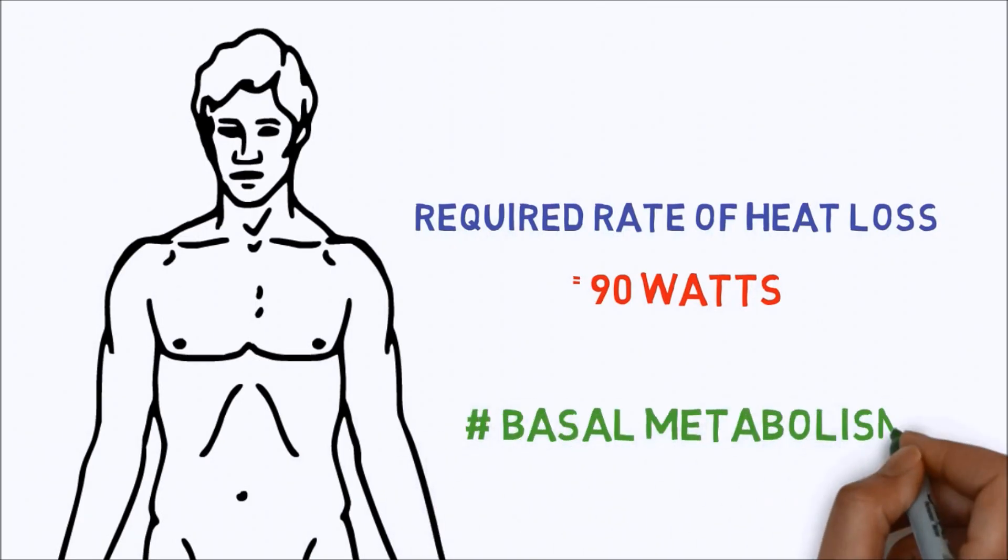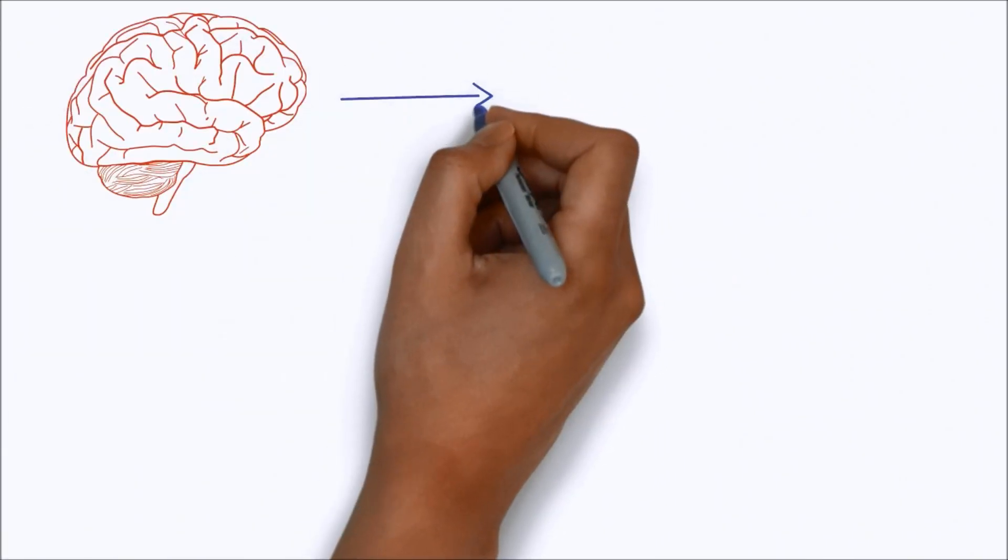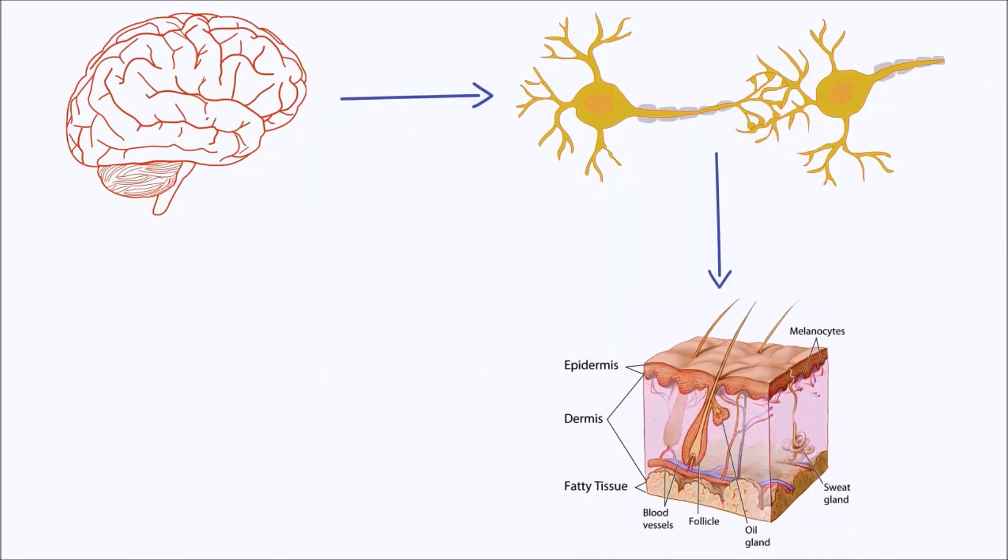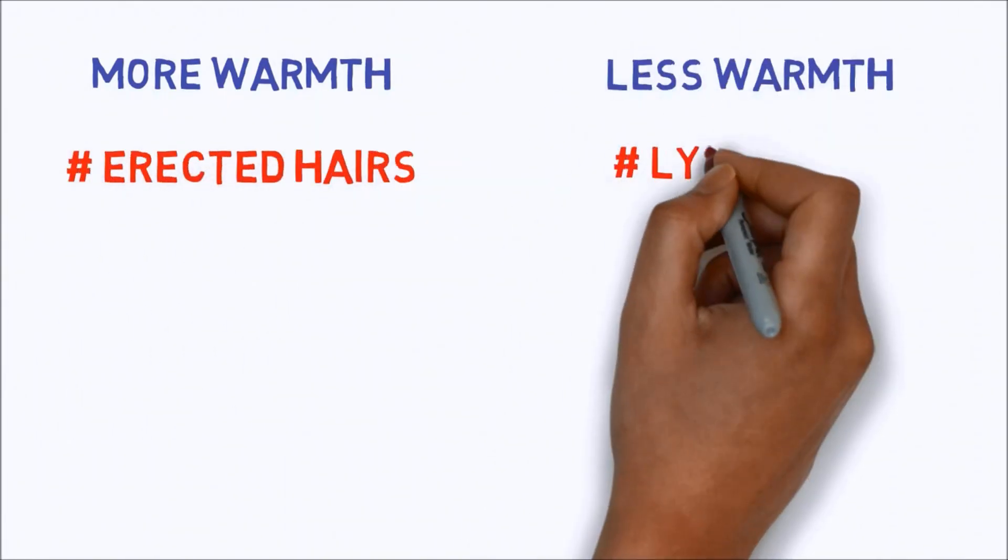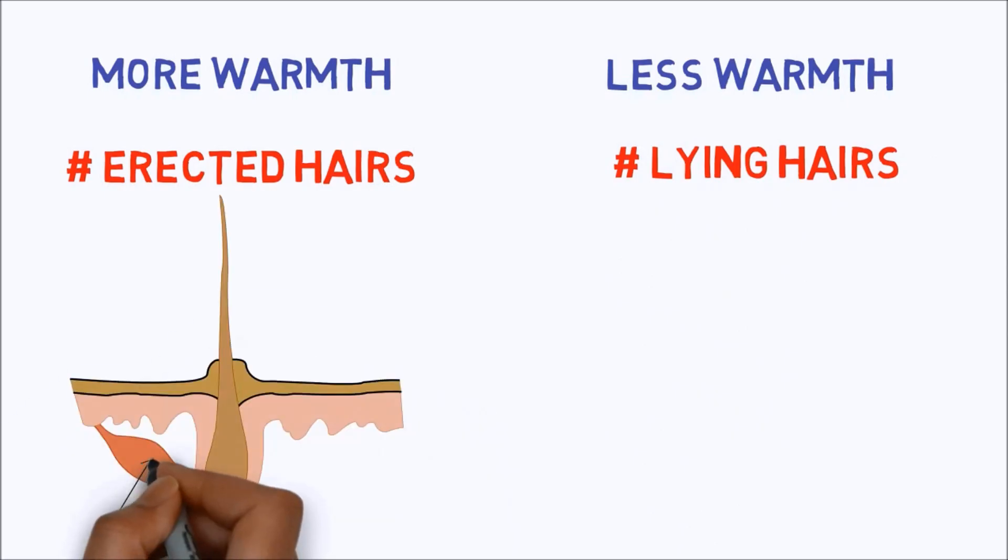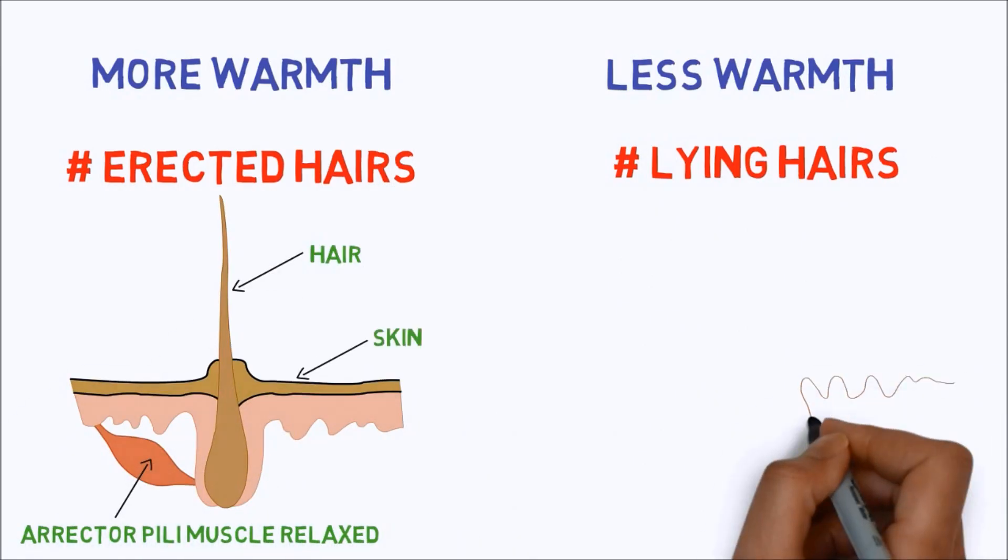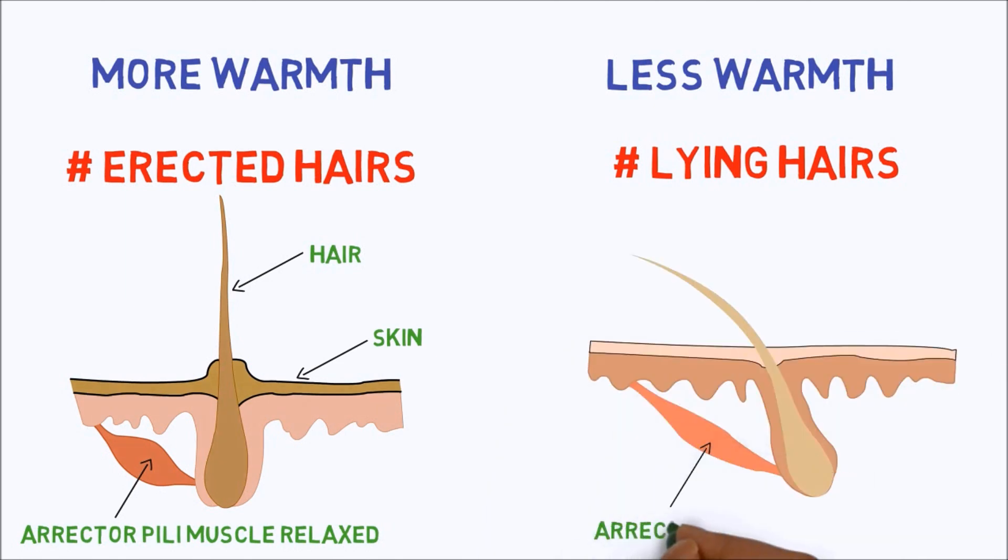If we are too hot or too cold, the processing center sends nerve impulses to the skin, which has two ways to either increase or decrease heat loss from the body surface. First, hairs on the skin trap more warmth if they are standing up and less if they are lying flat. Tiny muscles in the skin can quickly pull the hairs upright to reduce heat loss or lay them down flat to increase heat loss.